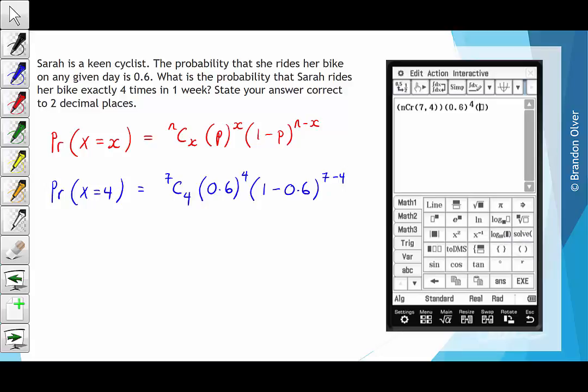Next, we multiply that by the probability of a failure, which is her not riding the bike, and we can do that by finding 1 minus 0.6, which is 0.4. Finally, we raise that to the power of failed attempts, which is 7 minus 4, or 3.